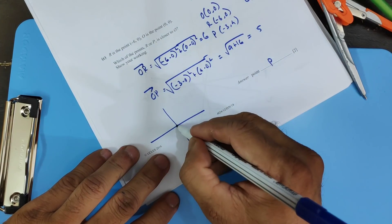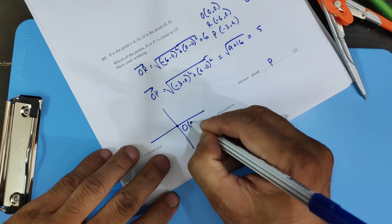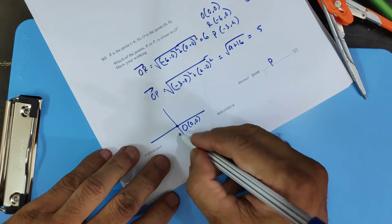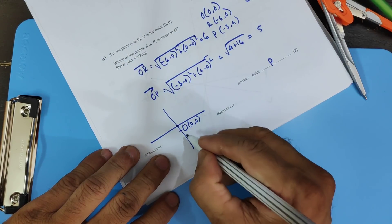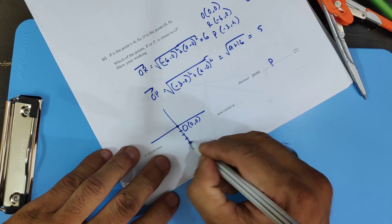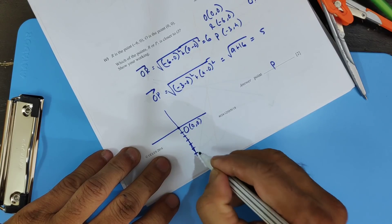To visualize this: O is at (0, 0) on the graph, and R is at minus 6 on the x-axis.